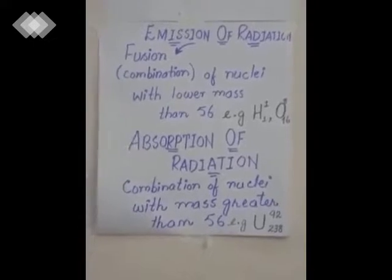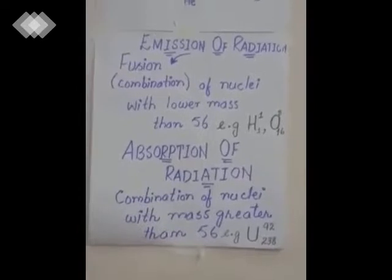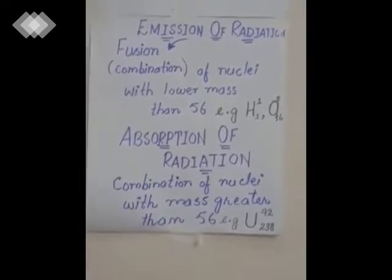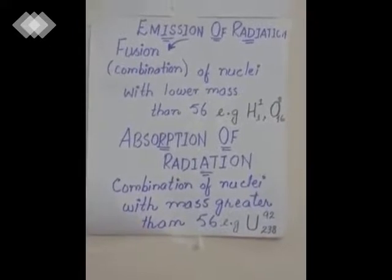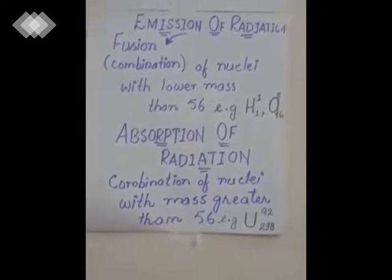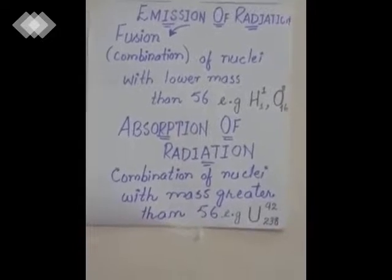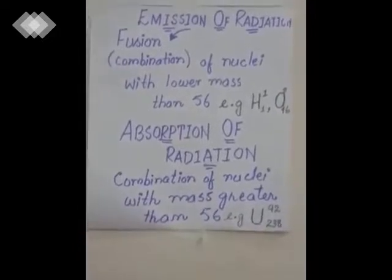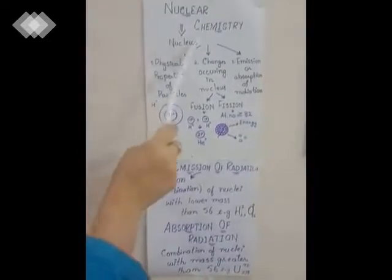On the other hand, absorption of radiation occurs when nuclei with atomic mass greater than 56 combine together — they need to absorb energy. For example, uranium undergoes this process. That whole explanation about the nucleus is studied in the branch called nuclear chemistry.